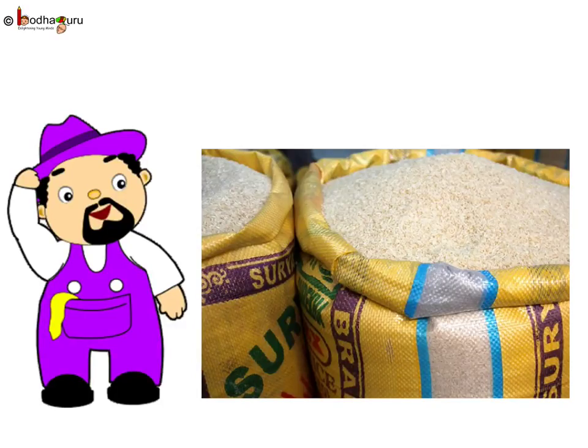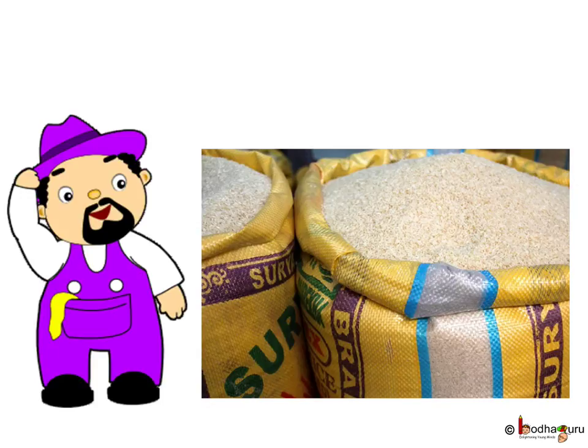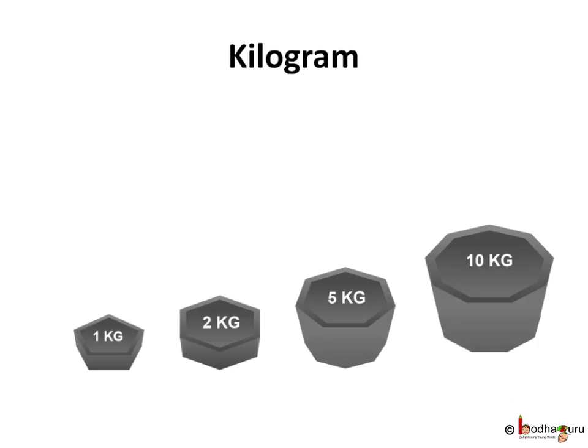Same way, there are fixed units to measure how heavy an object is. Rajan buys the same amount of rice every month. This month the bag seems lighter than usual. So has he been deceived? Can we find out how much rice is less?